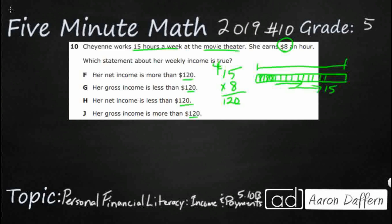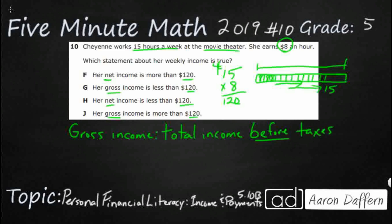So theoretically, she earns $120 — $8 for every single hour. But now take a look at what we have here. We've got some different terms: net and gross. We need to know whether her net or gross is going to be more or less than $120. So let's define the two terms. Gross income — and I know it sounds a bit unusual — is used as a term of measurement here. Gross is your total income, before taxes and payroll deductions.